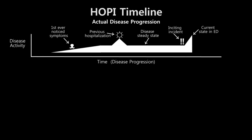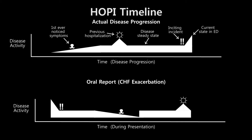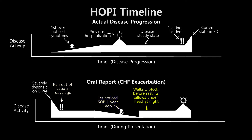You will ask questions to understand the progression of the illness or timeline that brought the patient into the ED. When actually presenting, you will explain these events out of order. For example, a patient may have first noticed they were getting more short of breath with exertion over a year ago, which slowly worsened. After running out of his medication five days ago, he began having trouble breathing even when resting. Instead of reporting chronologically, it is nearly in the reverse order: 'This is a 70-year-old male presenting with severe dyspnea. He ran out of his Lasix five days ago and has progressive shortness of breath. He first noticed shortness of breath with exertion about a year ago. Currently at baseline, he's able to walk about a block before requiring rest, and he sleeps with two pillows under his head at night. He has not been hospitalized previously for dyspnea or heart failure.'